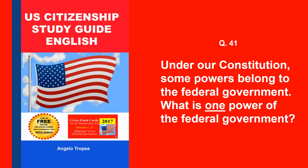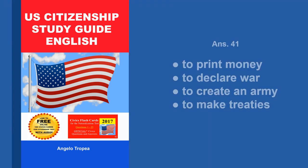Under our Constitution, some powers belong to the federal government. What is one power of the federal government? To print money. To declare war. To create an army. To make treaties.